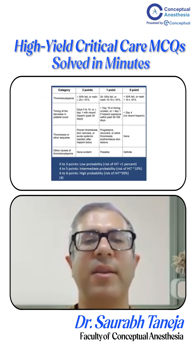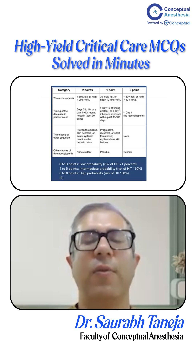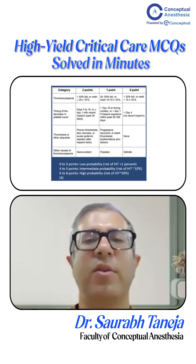Let's look at what the 4T score is. The 4T scoring system is defined around heparin-induced thrombocytopenia. Each of the four components is scored from 0 to 2, giving a total score ranging from 0 to 8.